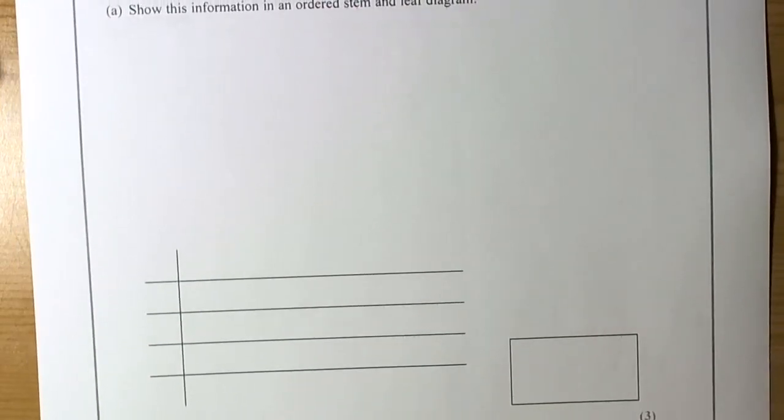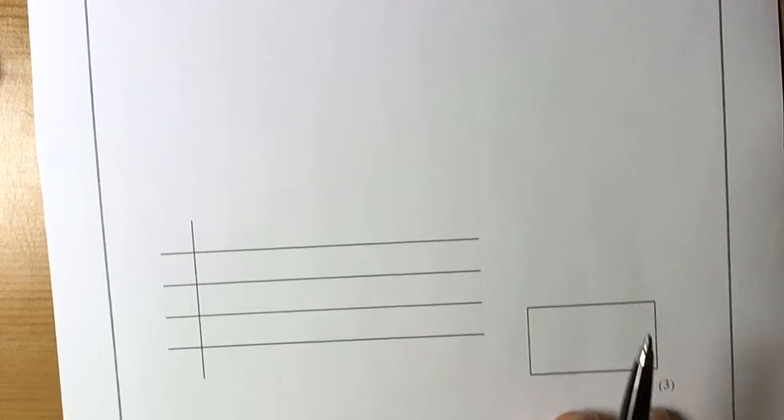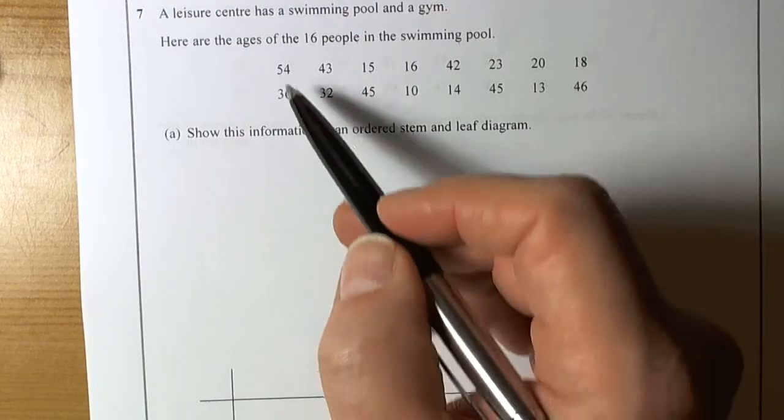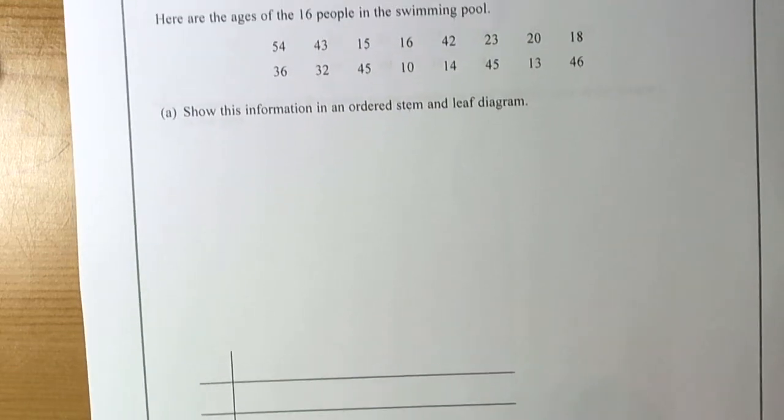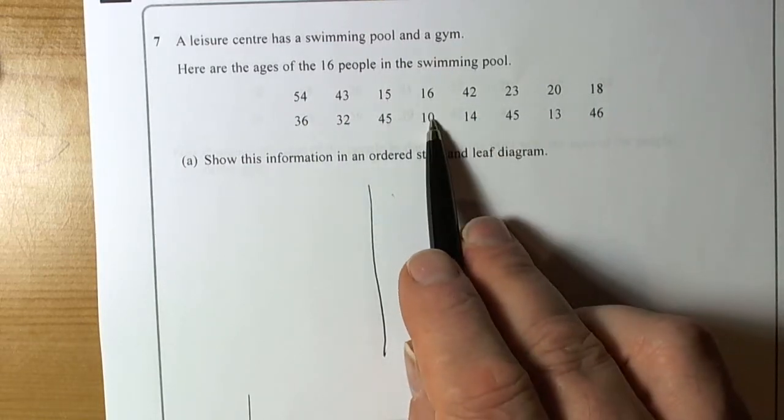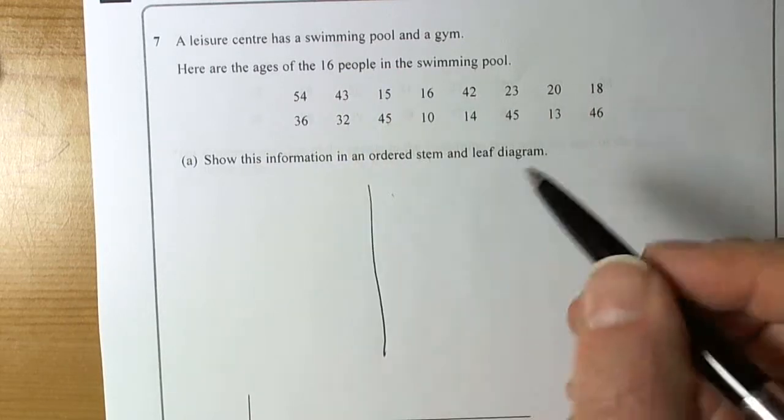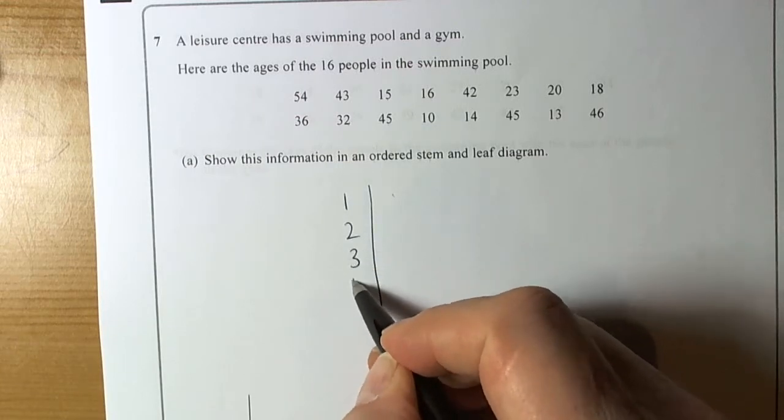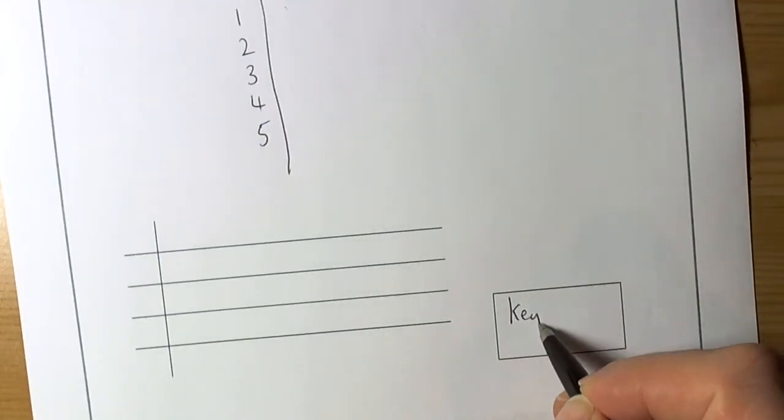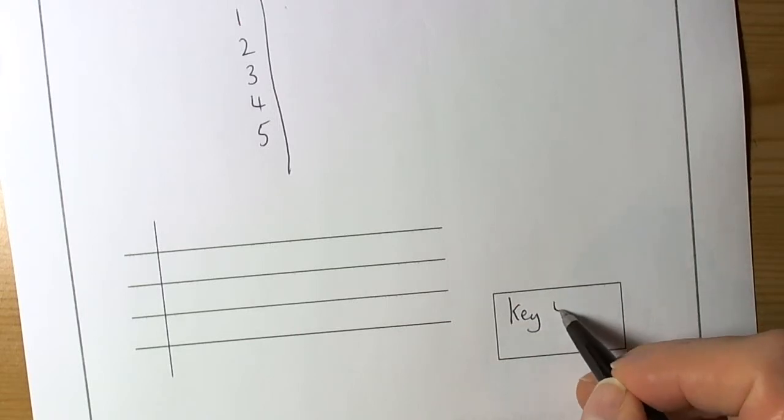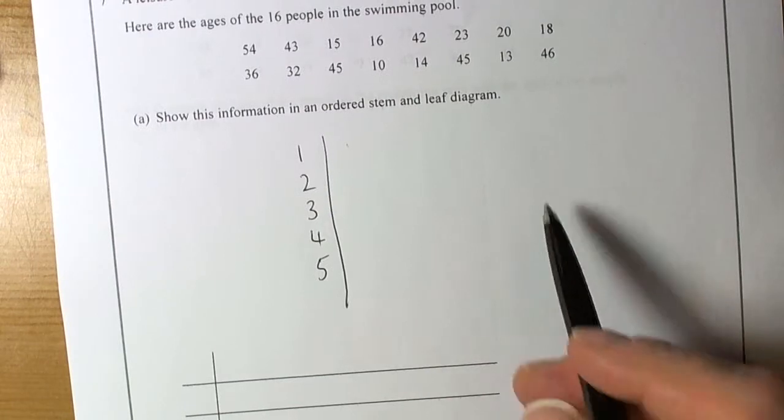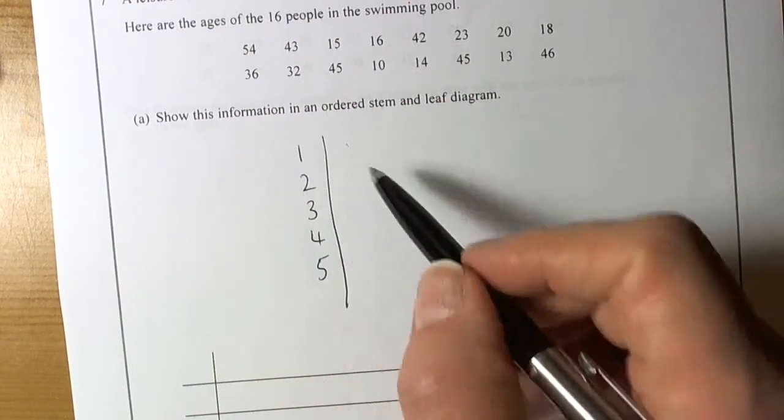Sometimes the exam board will ask you to draw them. Sometimes they're nice. They give you a table already. Now the working space here is to do what they call the unordered table, so that you can do a quick sketch. Just go through each of these one by one and then redraw it as an ordered table. So that's the approach I'm going to take. So we look for the minimum value in here which looks to be 10, and look for the maximum value in here which looks to be 54. So we know that we split the table up into our 10 parts and our units parts is our stamp. And again, key point, we always must put a key down. So we're going to say something like 4 stroke 3 equals 43 years old. Because it's about age.